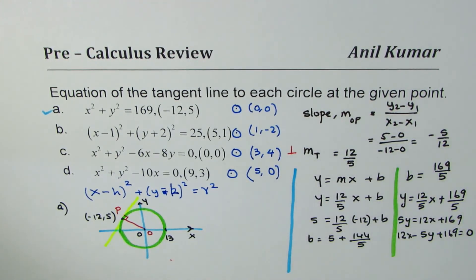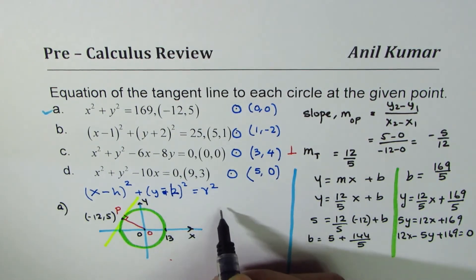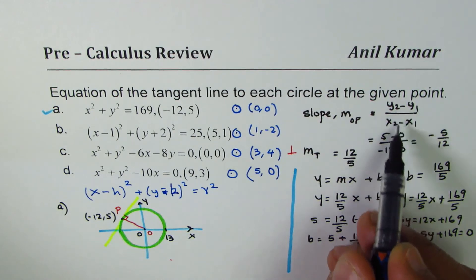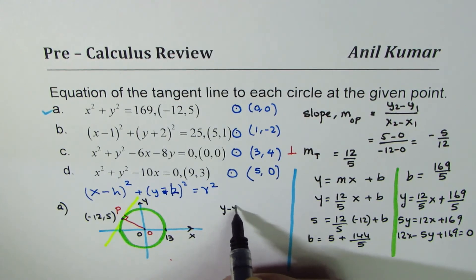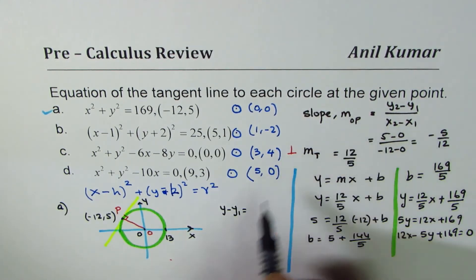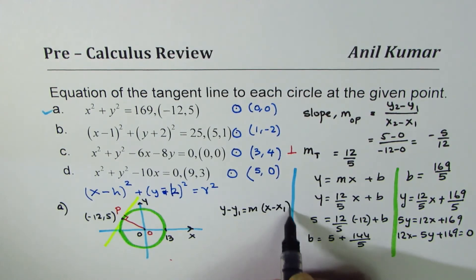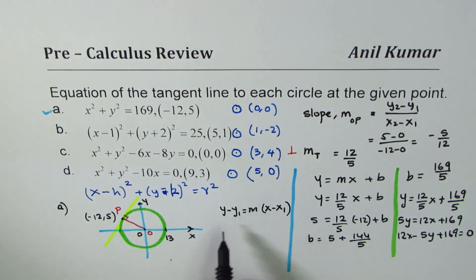Some of you may like to use another form, which is derived from here itself. So we can write that y - y₁ = m(x - x₁). So you could use this formula and also get the same equation. It's all up to you. Follow the method which best suits you.